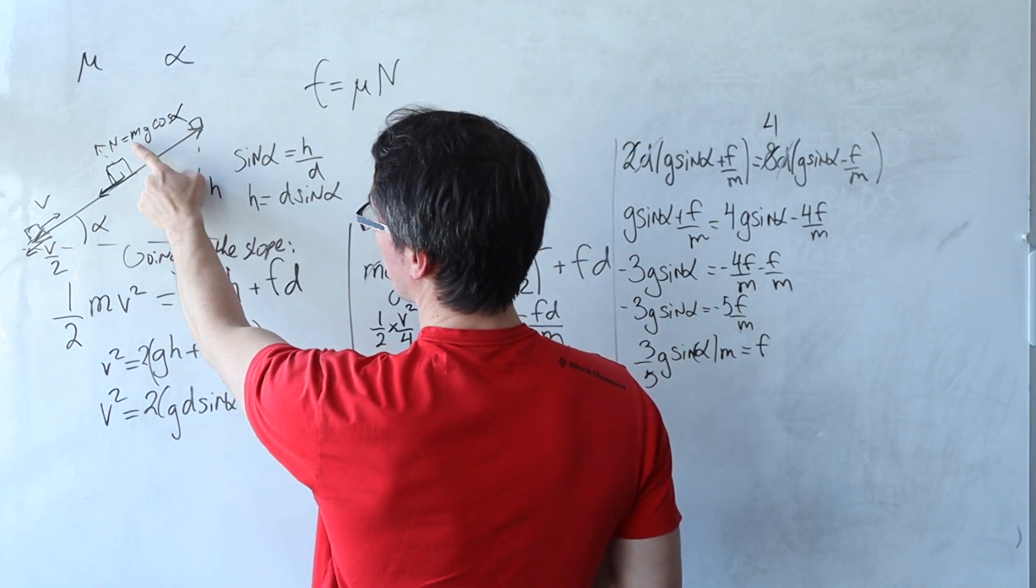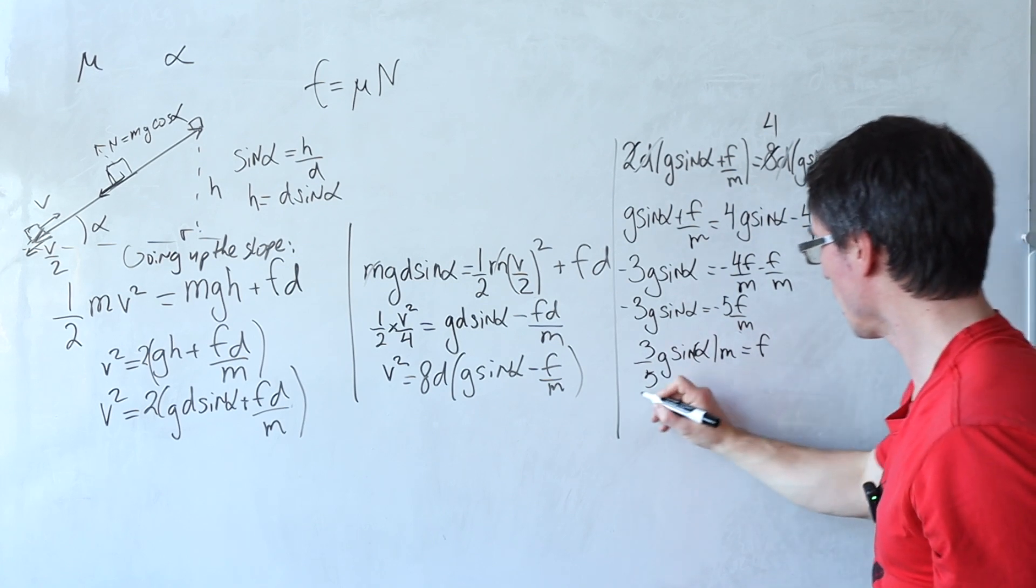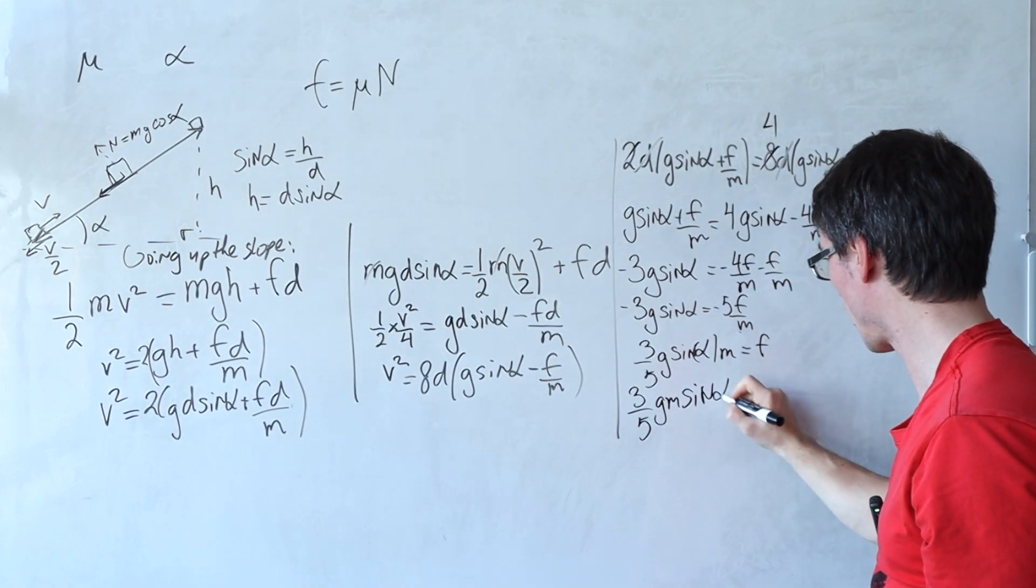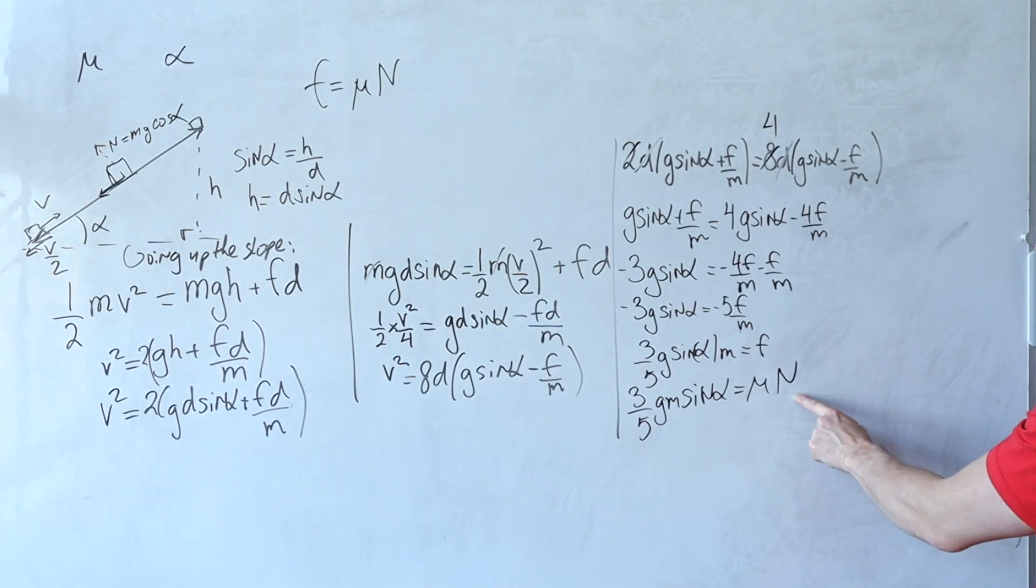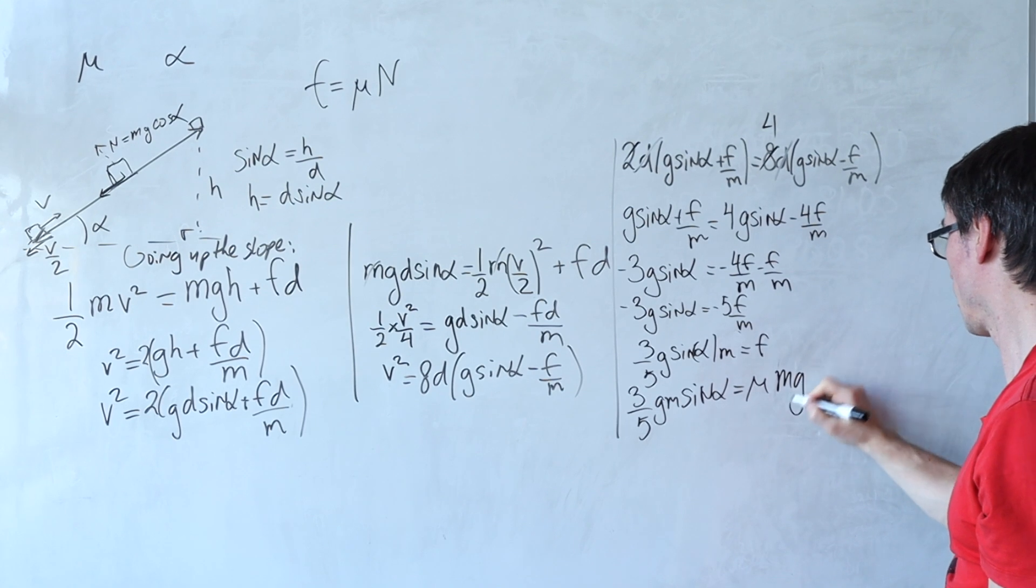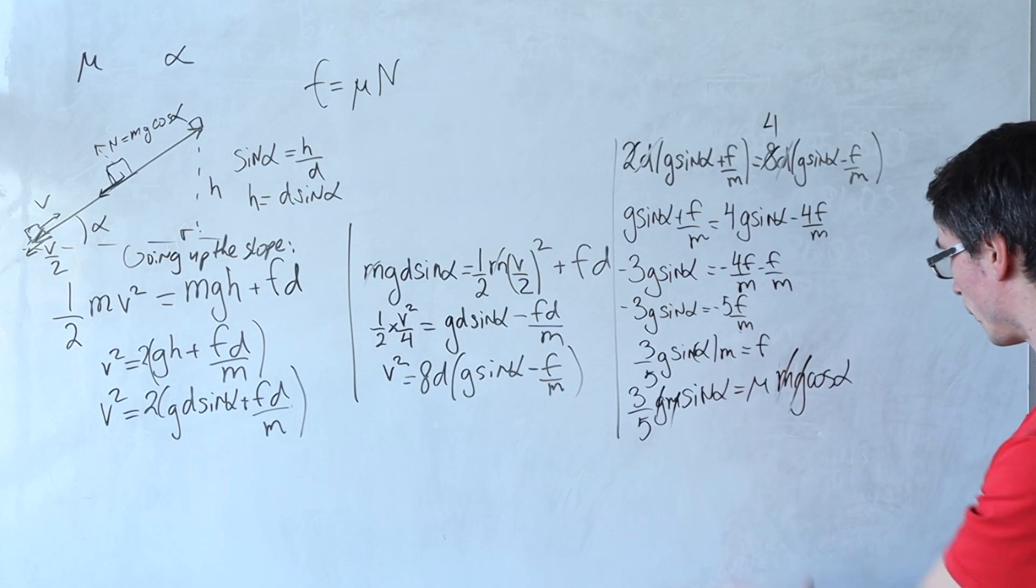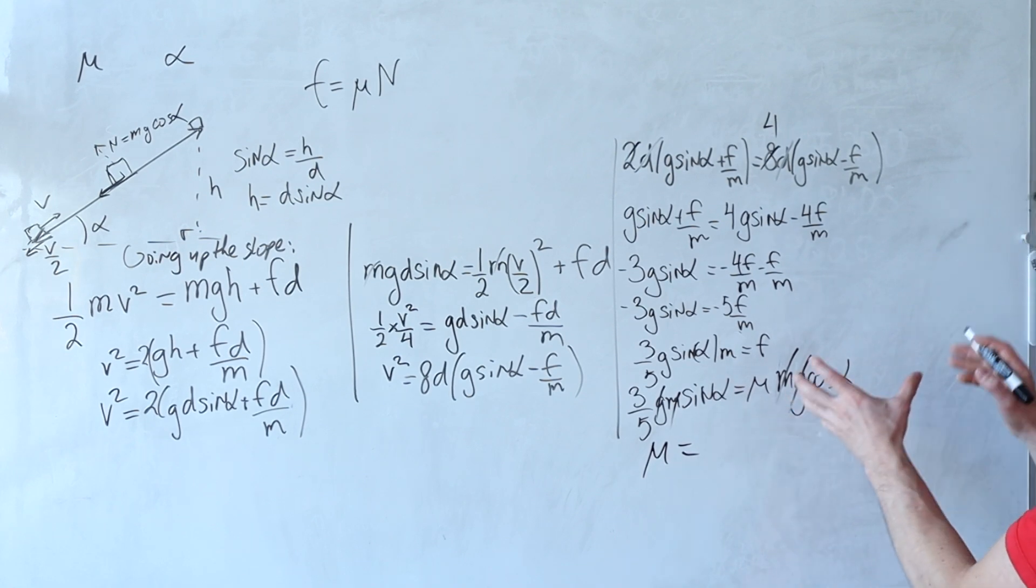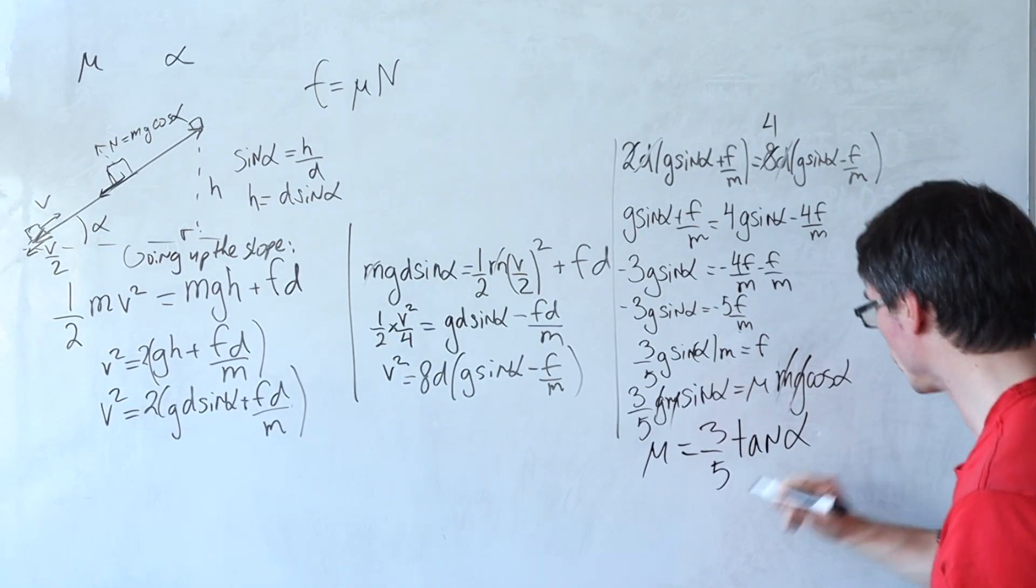Okay, so n should be mg cos of alpha. Now we can plug this into essentially here because we're going to get 3 over 5gm sine of alpha is equal to the coefficient of friction multiplied by the normal reaction. But the normal reaction we've just said is going to be equal to mg cos alpha. And look at this, the m and the g are going to cancel. Beautiful. And what are we going to be left with? We're going to be left with that the coefficient of friction is equal to 3 over 5 multiplied by the tangent of the angle.